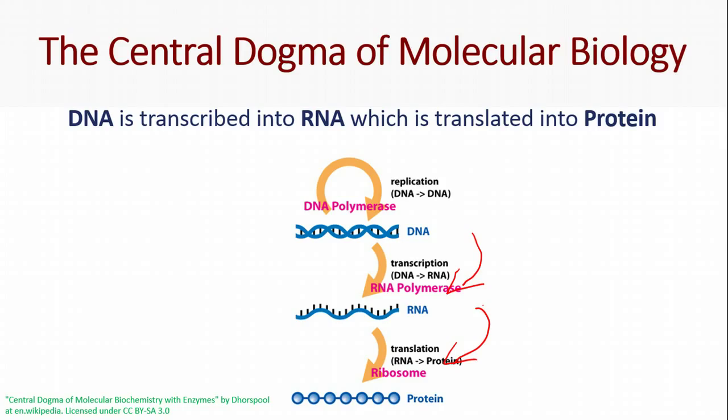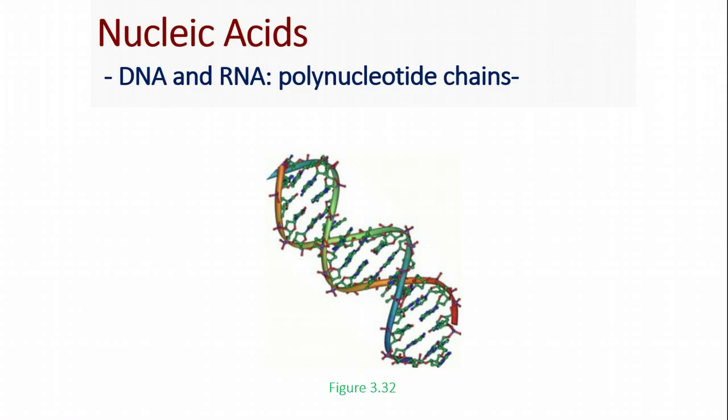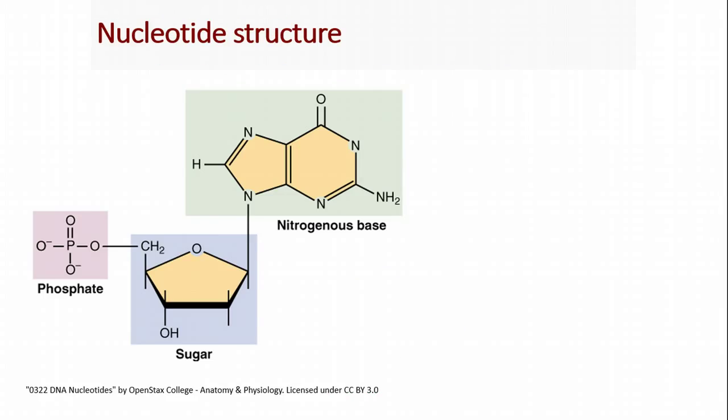That's the big picture of what we're talking about in this module. So let's talk about DNA and RNA first. These are polynucleotide chains — nucleotides that are bonded together into long chains to form either DNA or RNA. When I say nucleotide, I'm talking about a structure with three distinct pieces.